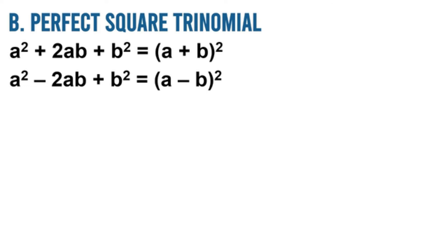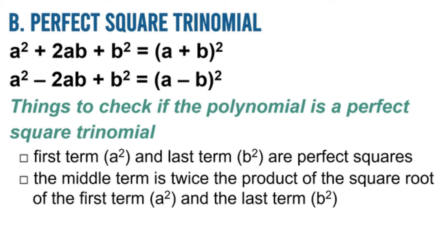Perfect square trinomial. If the given polynomial is like a squared plus 2ab plus b squared, it is a perfect square and your factor will just be a plus b, squared. To check if a polynomial is a perfect square trinomial: first, the first term (a squared) and the last term (b squared) must be perfect squares. Second, the middle term must be twice the product of the square roots of the first and last terms. Let's have examples to understand this clearly.